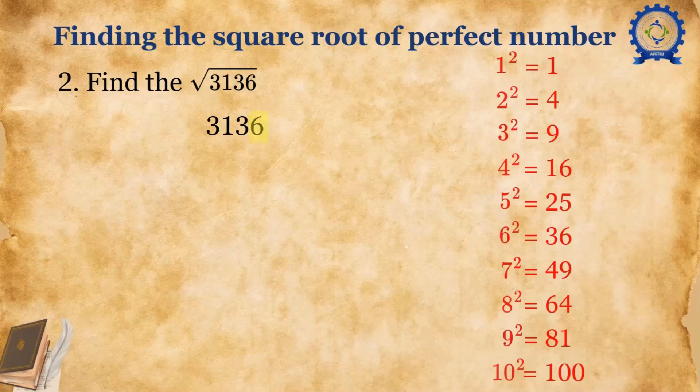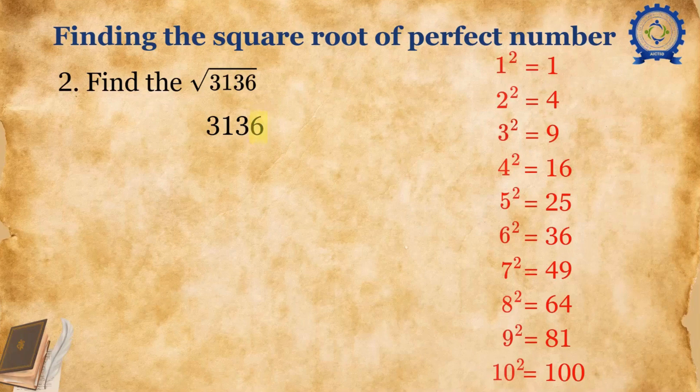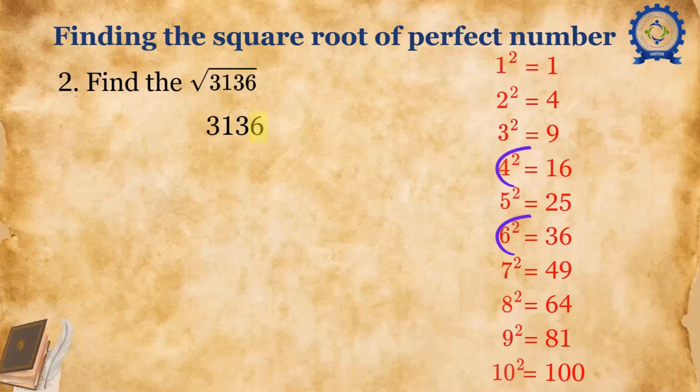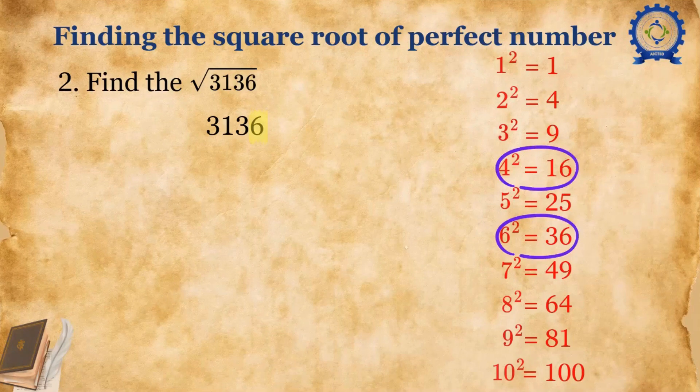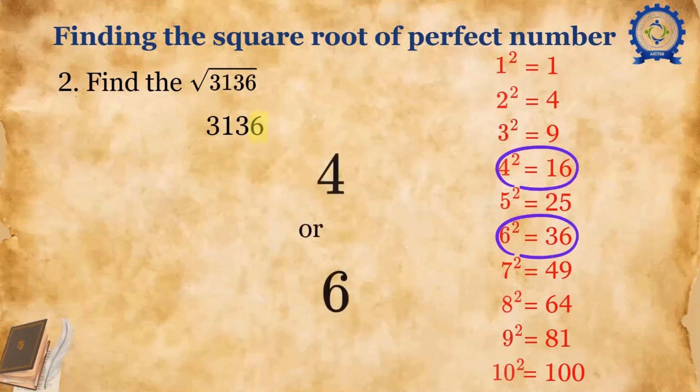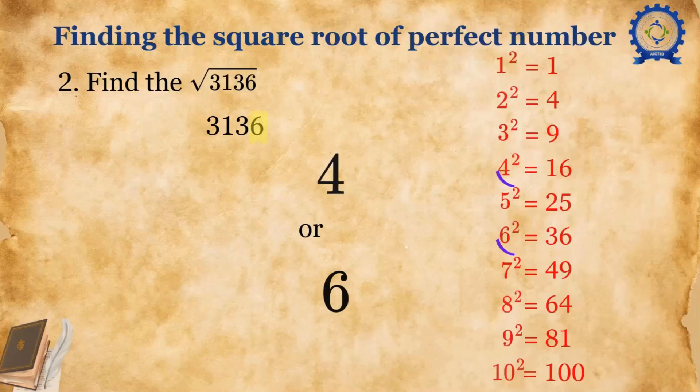We have to see the list of squares and check for the unit digit 6. Here we have 4² = 16 and 6² = 36. These are the only two numbers that have 6 in the unit digit. So the unit digit of our answer will be 4 or 6.